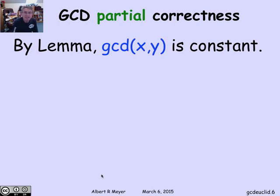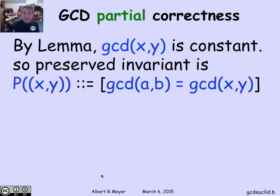According to the lemma, since I'm replacing the GCD of x and y by the GCD of y and the remainder of x divided by y, the GCD is actually staying constant. This transition preserves the GCD that's left in the pair of registers x and y. The GCD of x and y at any point is equal to its original value, which is the GCD of a and b. So this equation is a preserved invariant of the state machine.